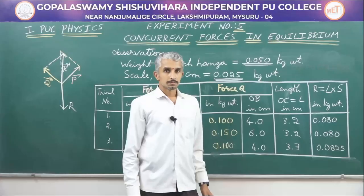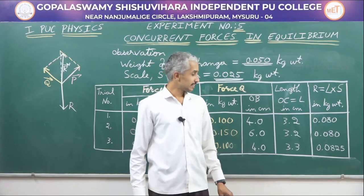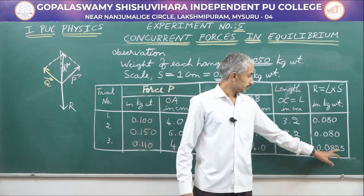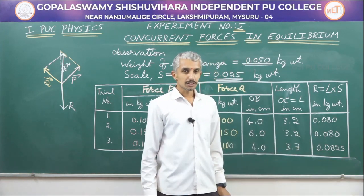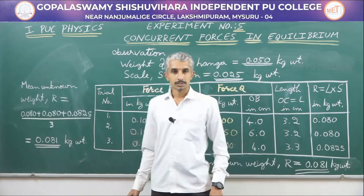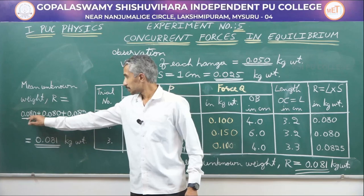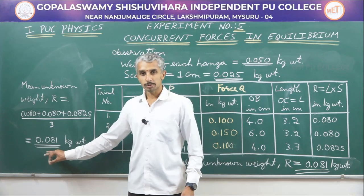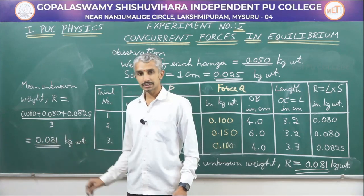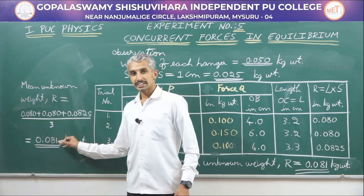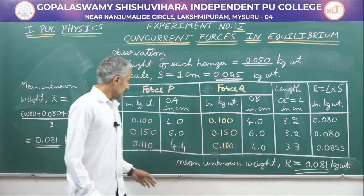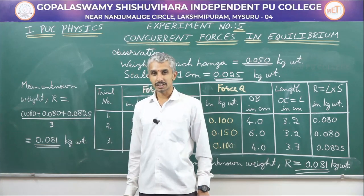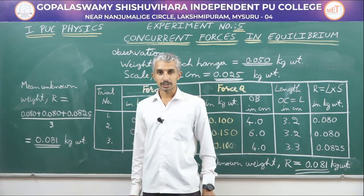For the third trial, the diagonal length is 3.3 centimeters, a small change from the earlier two, and the unknown weight is 0.0825 kg. Finding the mean: I add the values from all three trials and divide by three. The mean of the three trials gives the unknown weight as 0.081 kg (or 0.080833, rounded to three decimals as 0.081 kg).